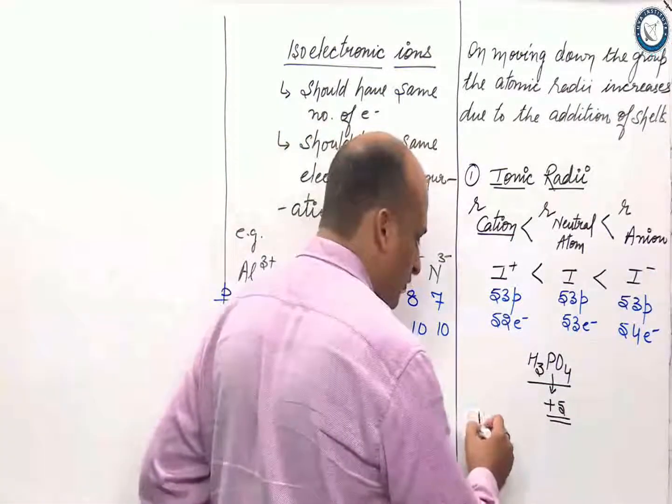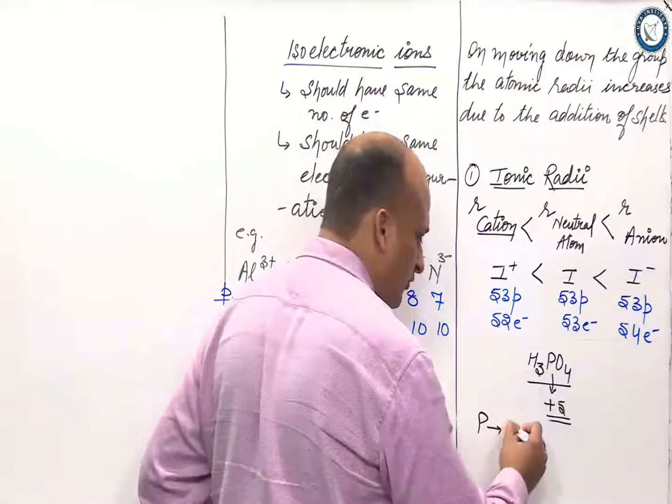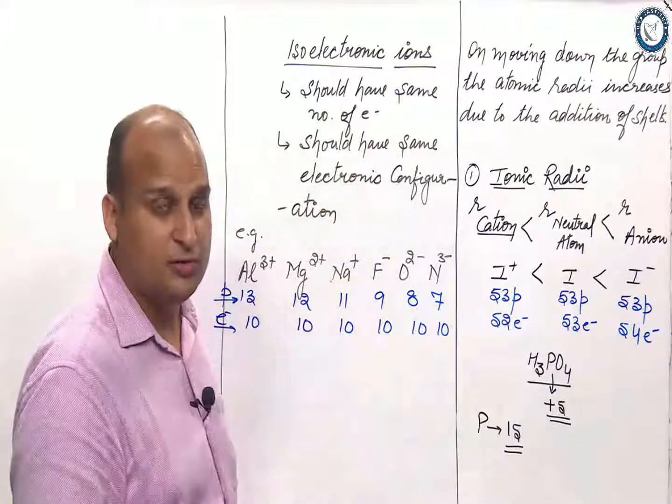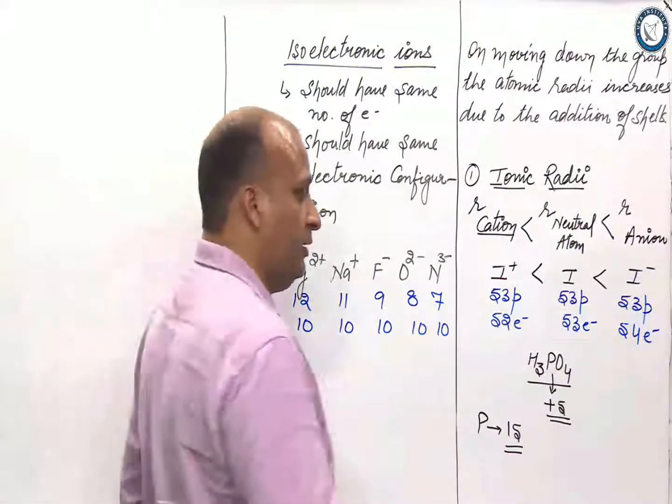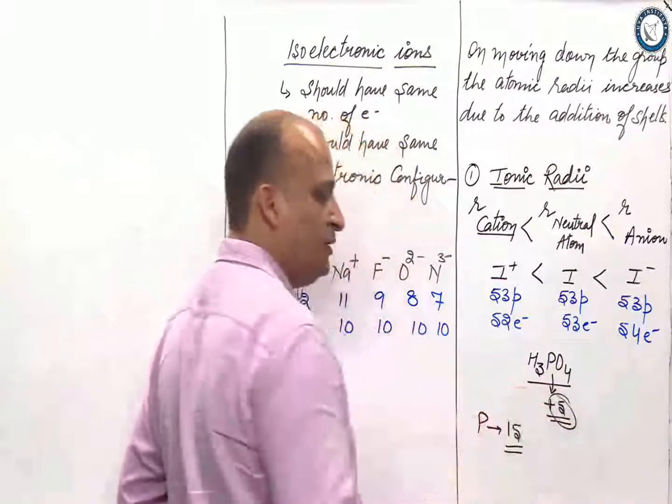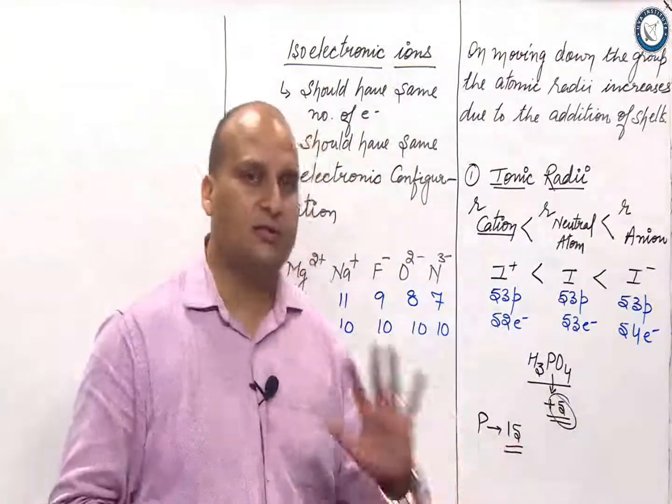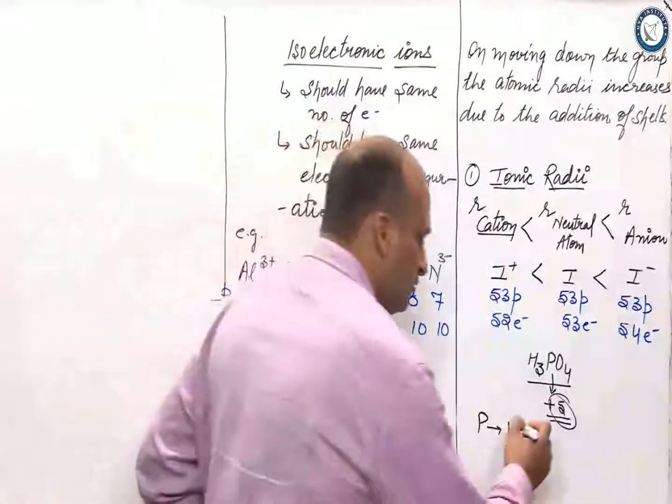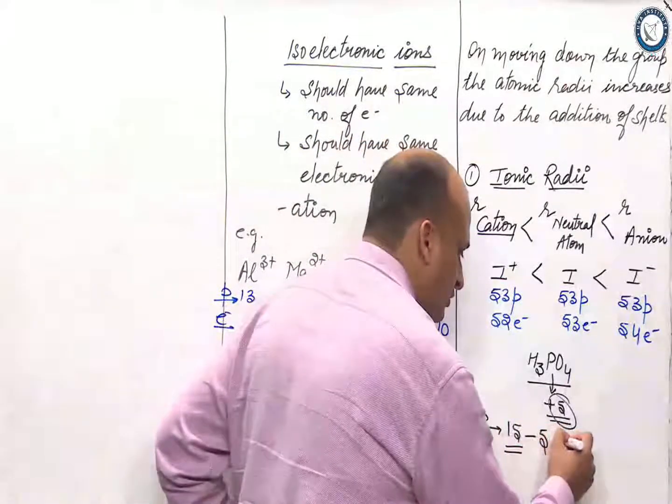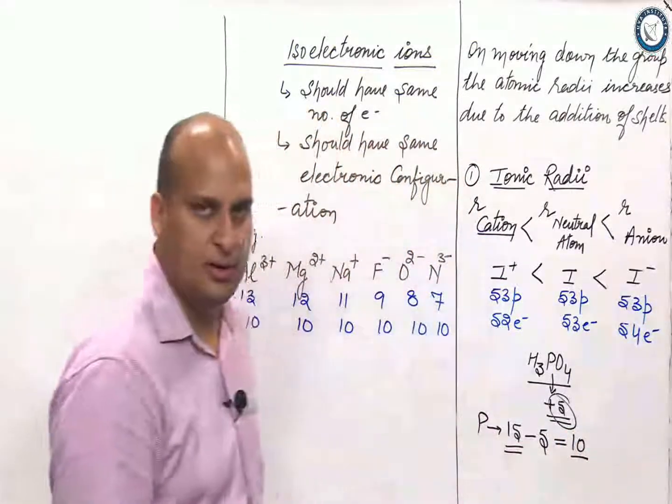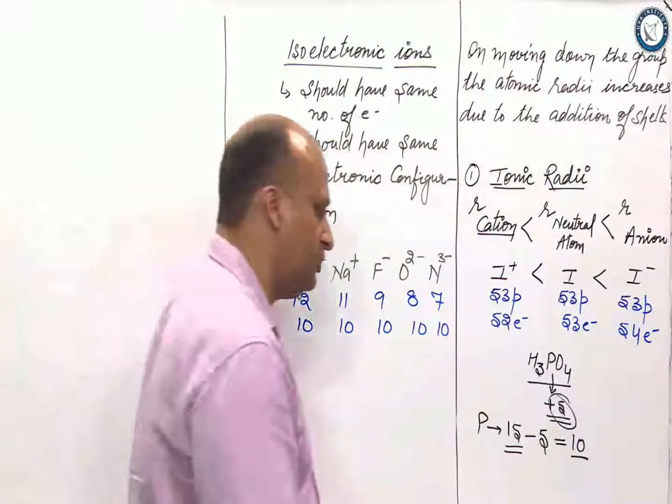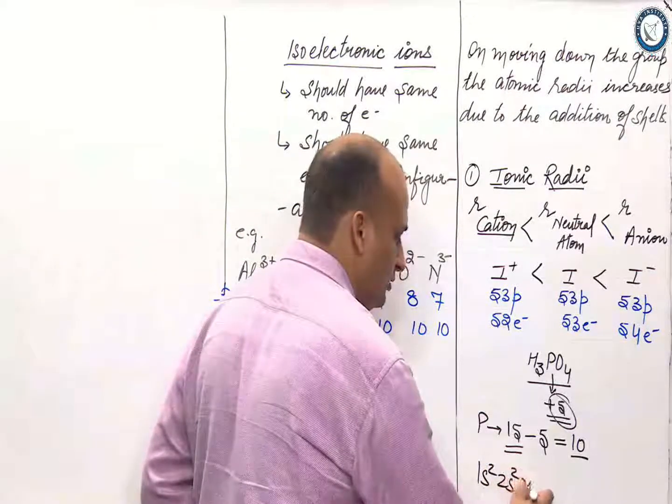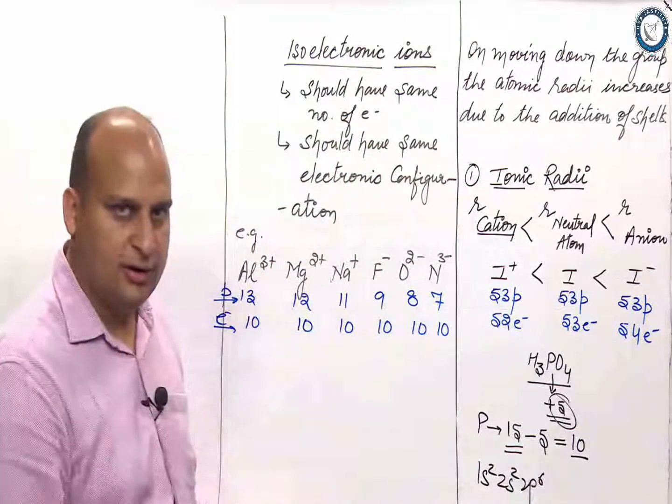You know that phosphorus has got a total of 15 electrons. The atomic number of phosphorus is 15. It is in the plus 5 state. Plus 5 state means it must have lost 5 electrons. So, 15 minus 5, this will be 10. So now, what will be the electronic configuration of atomic number 10? 1s2, 2s2, 2p6. Got it?